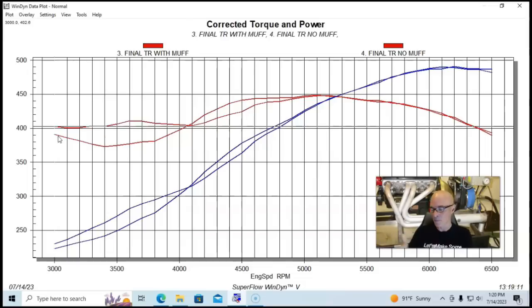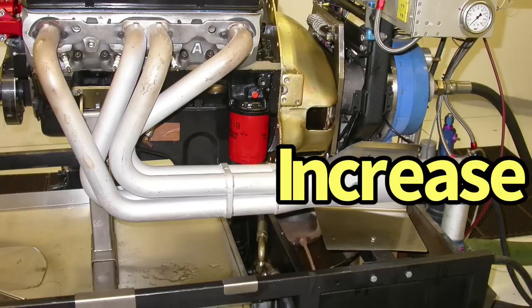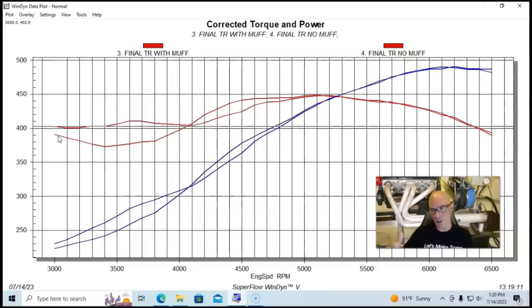If you just extend the collector length with a length of tubing that is the length of that muffler, we see exactly the same thing. This is just a collector length extension thing. Actually, if you run a full-length exhaust, once you get to a certain point there's no more change. Once you go from about three or four feet to 20 feet, there's no change except the change you might get from a change in flow rate from having that much tubing.